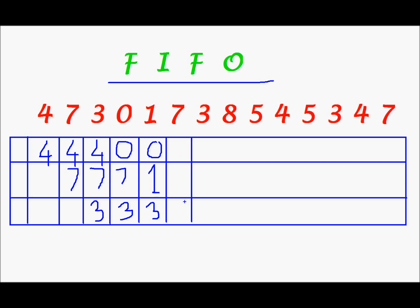Next, I have to bring in 7. And out of 0, 1, and 3, 3 was the first to enter. So 0 will be where it is, 1 shall be where it is, and in place of 3, I shall write 7.